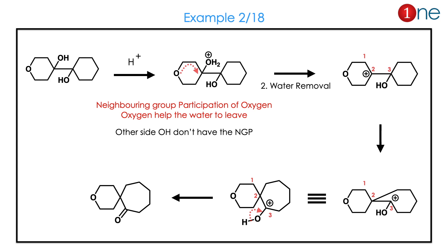Let us look at the next question. Here, some neighboring group participation chemistry is also important. You have an alcohol; there is water elimination. The electron-rich group helps the OH2 group to leave. Acid acts, OH2 leaves from that side, and the cation is quenched by next-side ring opening. It forms a 7-membered ring — the 6-membered ring becomes a 7-membered ring — and the final product is a ketone. Whenever you look at such a system, think of neighboring group participation.